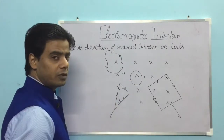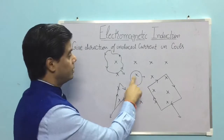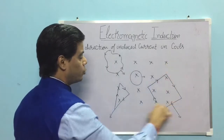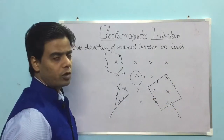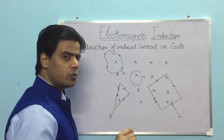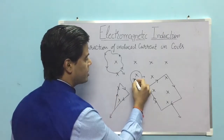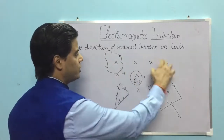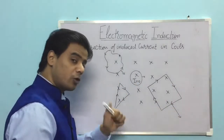For the circular coil that remains entirely within the uniform magnetic field region while moving, the number of magnetic field lines passing through the coil always remains the same. Since current is induced only when there is a change in magnetic flux, no current will be induced in this coil whether it is moving or at rest, as long as it stays inside the uniform magnetic field region.